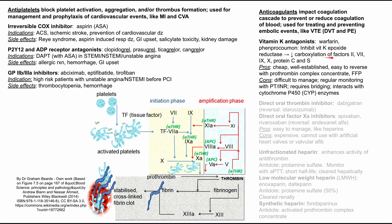Warfarin also requires bridging. It decreases the production of new coagulation factors — 2, 7, 9, and 10 are pro-coagulation factors, but proteins C and S are actually anticoagulant factors with a shorter half-life. So when you start warfarin, proteins C and S drop first, which can actually increase clotting briefly. You'll want to bridge — putting the patient on another anticoagulant for a week or two while the warfarin takes effect. Another downside is that warfarin interacts with cytochrome P450 enzymes, and many other drugs interact with these same enzymes, potentially changing warfarin's effectiveness based on hepatic clearance.